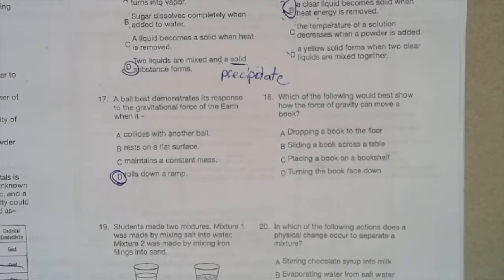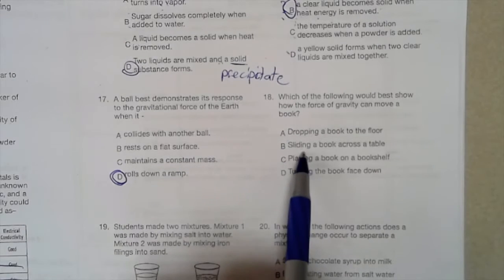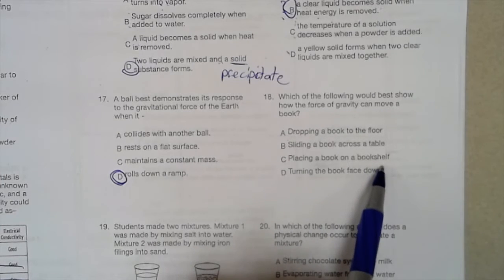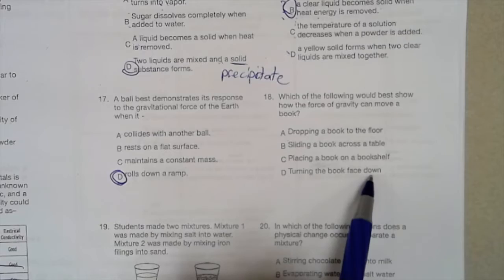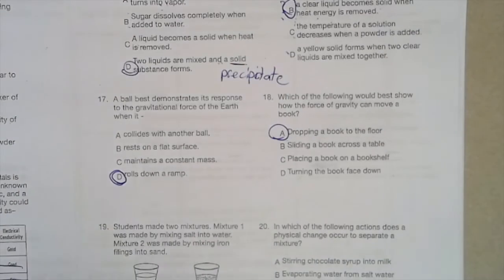Which of the following would best show how the force of gravity can move a book? Dropping a book on the floor? That sounds like gravity to me. Sliding a book across the table? No. Placing a book on a bookshelf? No. Turning the book face down? No. But dropping a book down shows gravity pulling everything towards the center of Earth.